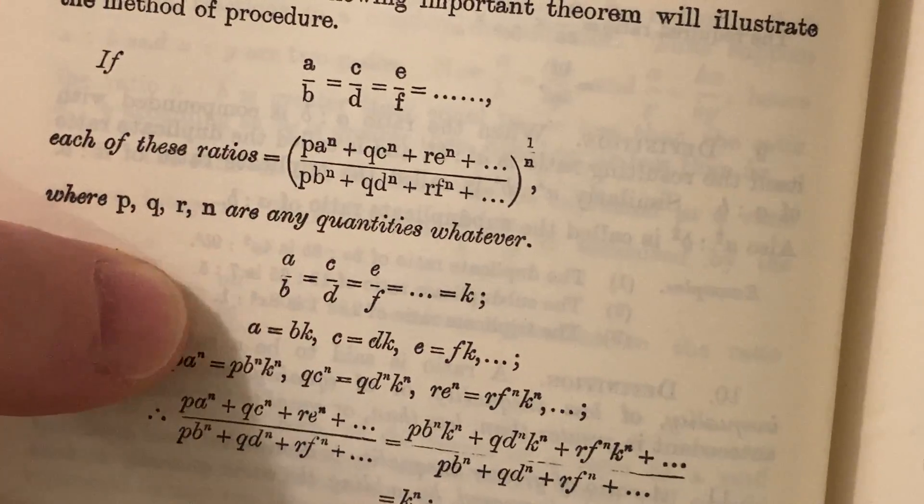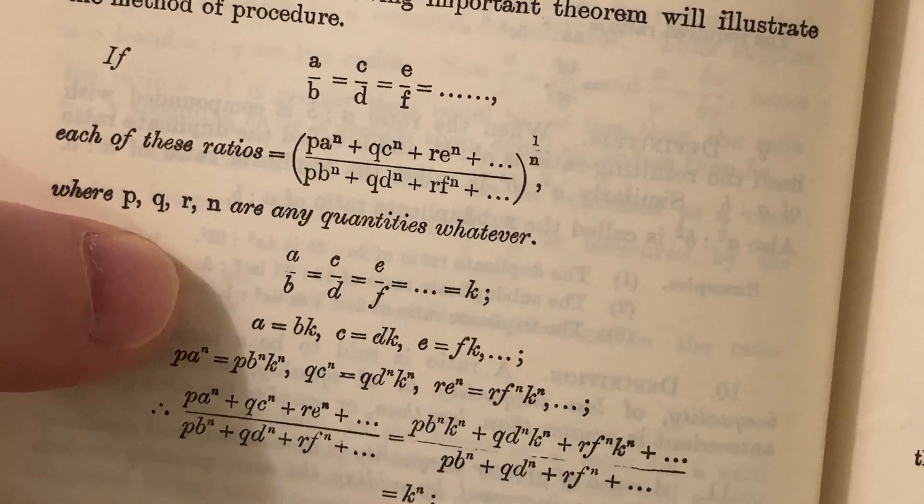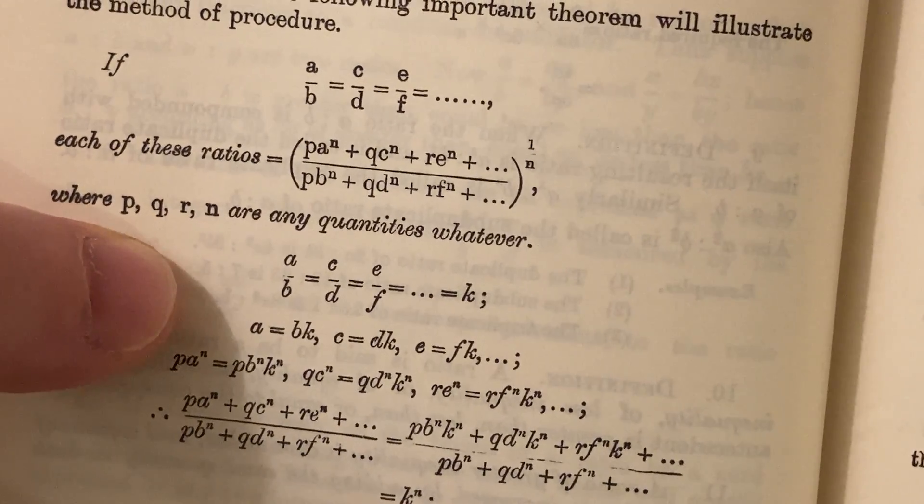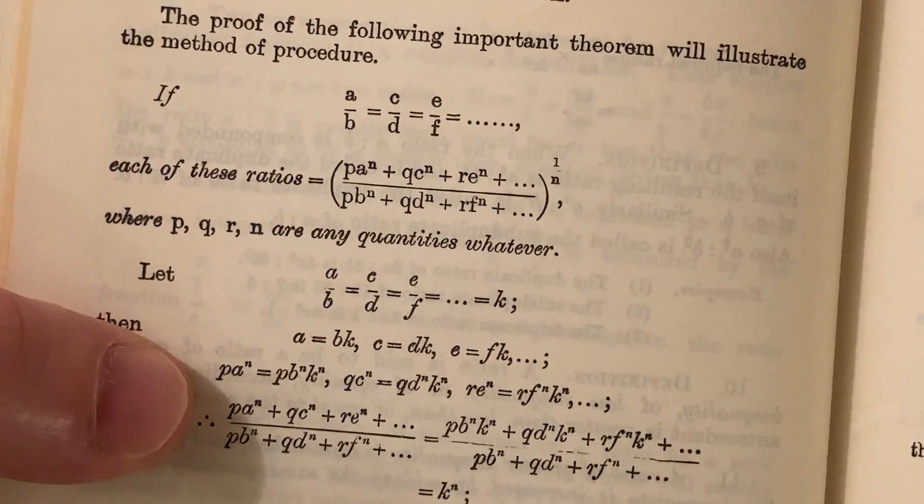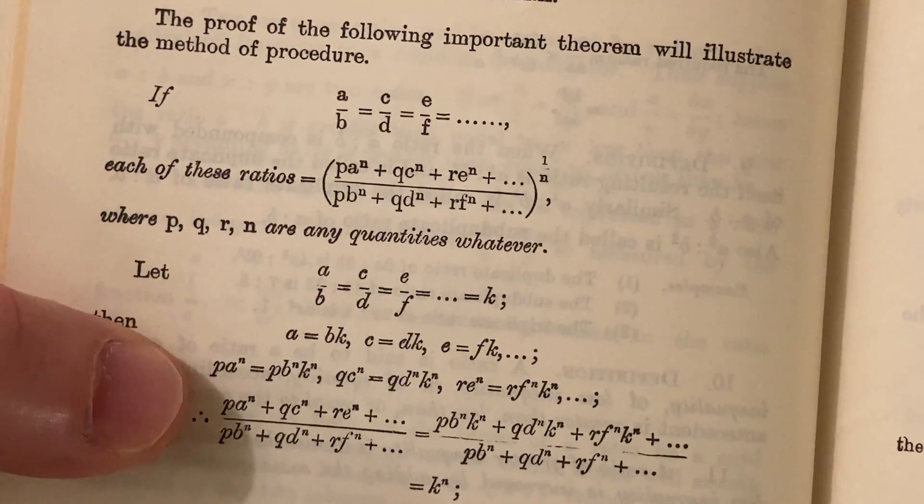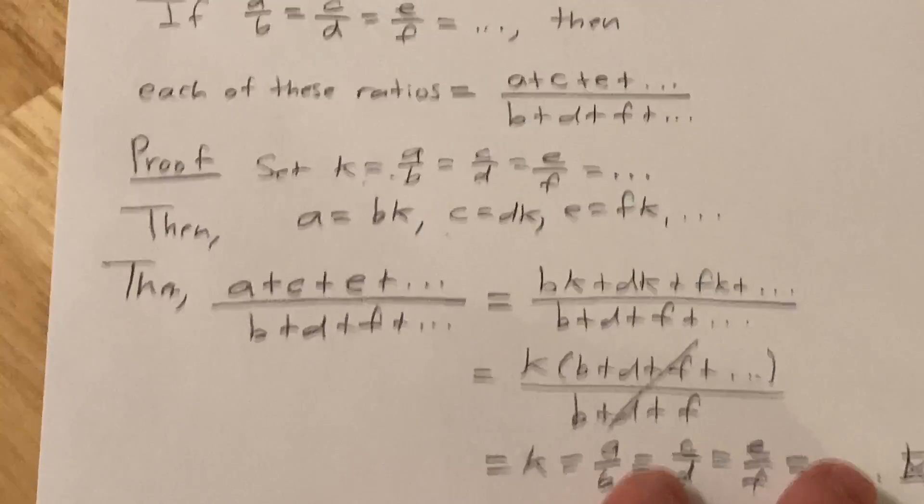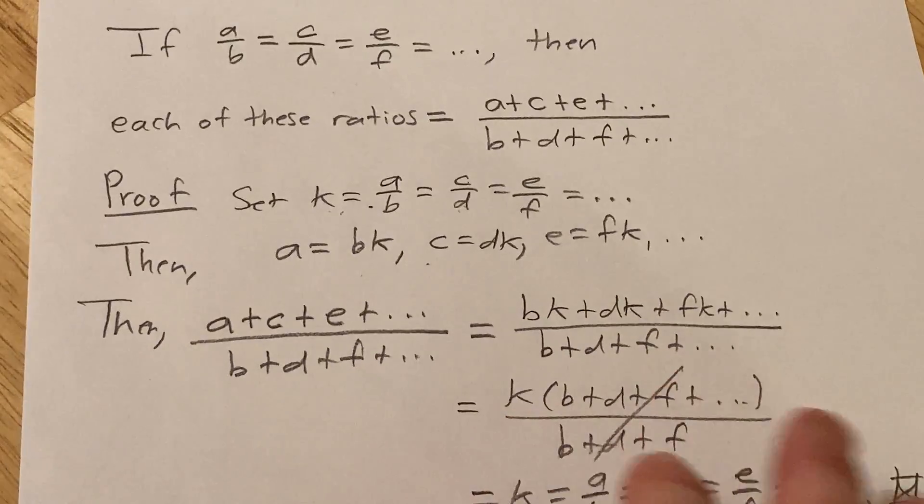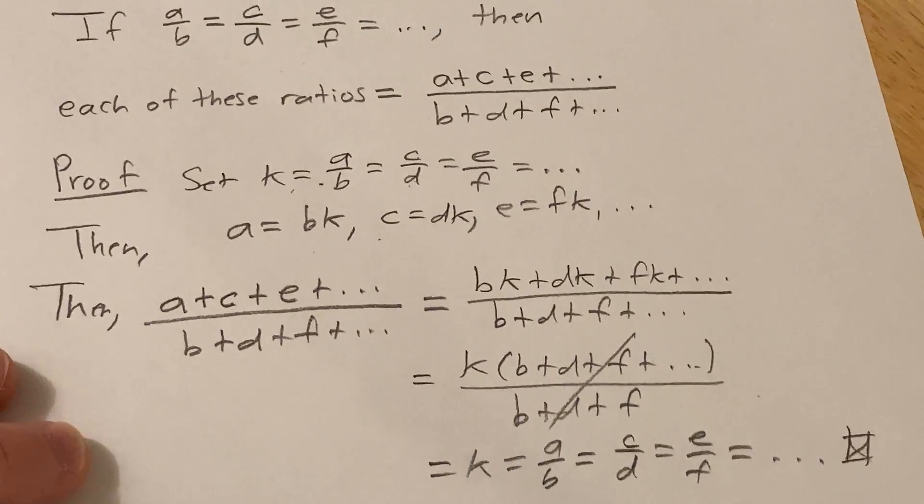So you notice how you have p's, q's, r's, and n's. So if you take p, q, r, and n all to be one, you basically get a plus c plus e, et cetera, over b plus d plus f, et cetera, which is what we have here. And then you can use this method to prove all kinds of other cool things. So kind of a fun little problem. I just thought I would share it. Good luck.